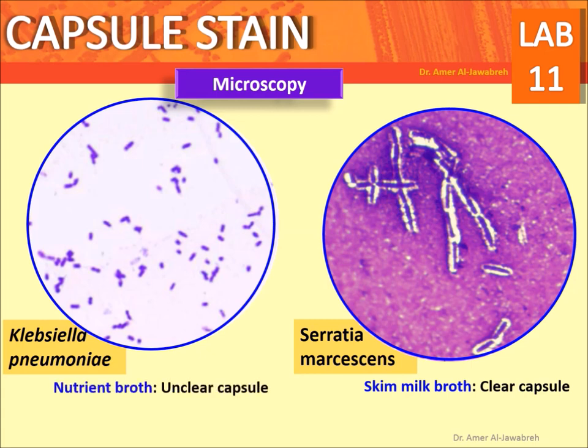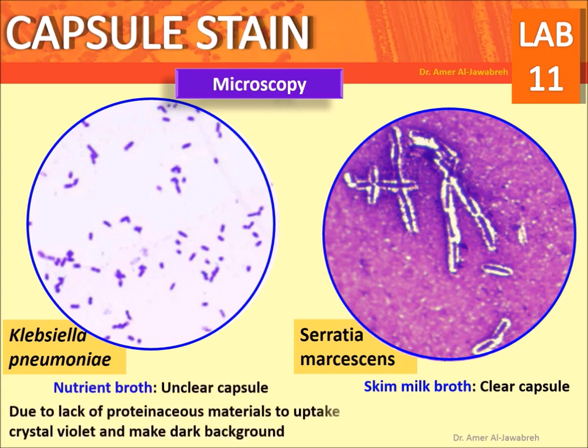Results note: Serratia marcescens in skim milk broth produces a clear capsule. Klebsiella pneumoniae in nutrient broth shows an unclear capsule due to lack of proteinaceous material to take up crystal violet and create a dark background.